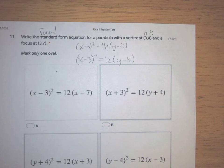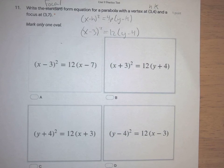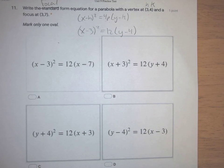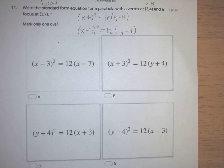So be careful with the order. Be careful with the plus and minus on the signs, because that could trip you up there. Let's see if we can find the one that matches here. So we got (x - 3)² = 12(y - 4).